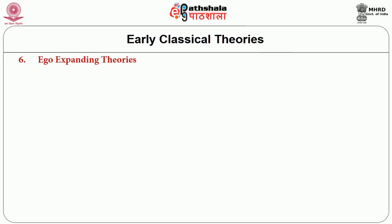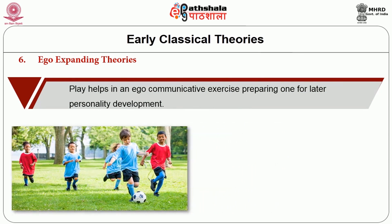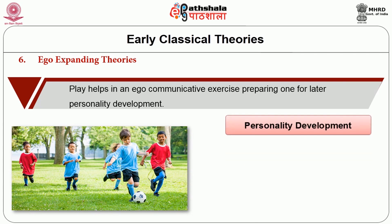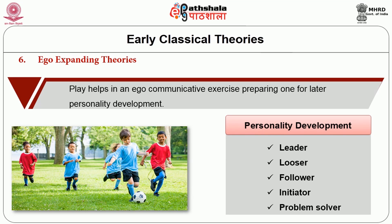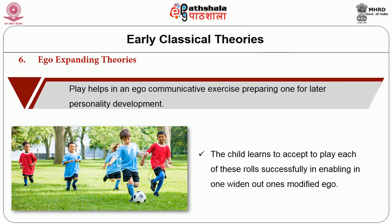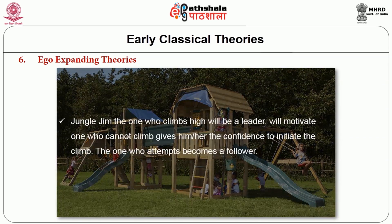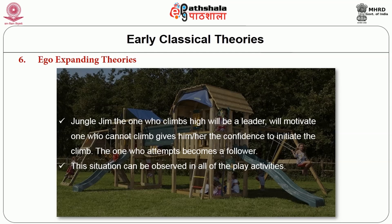Ego-expanding theories claim that play helps in ego communicative exercise, preparing one for later personality development. Play aids in personality development by virtually creating a stage for being a leader, loser, follower, initiator, or problem solver. The child learns to accept and play each of these roles successfully, widening one's own modified ego. Take jungle gym as an example: the one who climbs high will be a leader and motivate one who cannot climb, giving the other the confidence to initiate climbing. The one who attempts becomes a follower. This situation can be observed in all play activities.